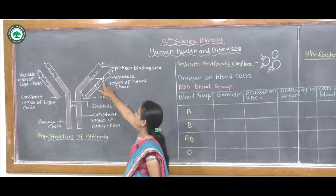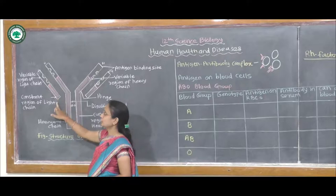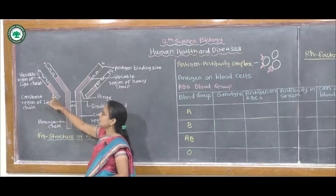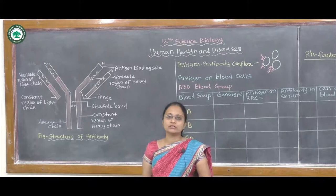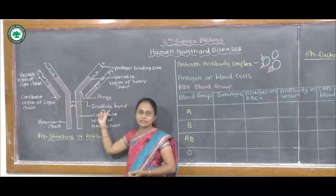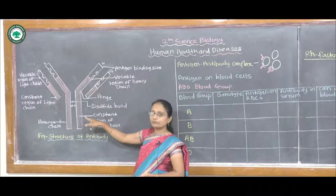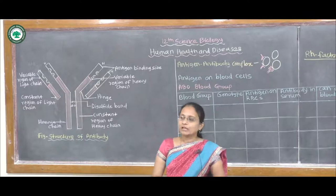The heavy chain shows a variable region as well as a constant region. Similarly, the light chain shows a variable region as well as a constant region of the light polypeptide chain. So these four polypeptide chains are each made up of two regions: the constant region and the variable region. Each chain is not separated — they are bound together with the help of disulfide bonds. Where they form a fork or turn into the Y shape, that point is called the hinge.